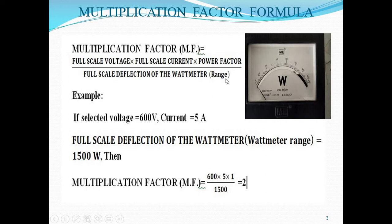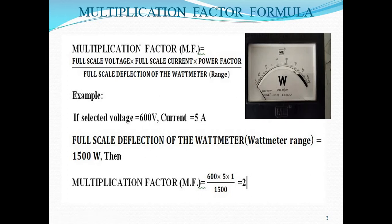The basic theoretical formula for calculation of the multiplication factor is: multiplication factor equals full scale voltage into full scale current into power factor, divided by full scale deflection of the watt meter — that is, the range of the watt meter. For this watt meter, 0 to 1500, so 1500 is the watt meter range. Regarding power factor, unless stated otherwise, you need to consider power factor equal to 1 every time.